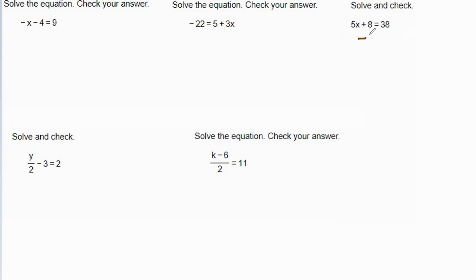For 5x plus 8 equals 38, the opposite of positive 8 is negative 8, so we're going to subtract 8 on both sides. That gives us 5x equals 30. Note that 5x is the same thing as 5 times x, but we typically don't write the multiplication sign. Next we divide both sides by 5, and that gives us x equals 6 as our answer.